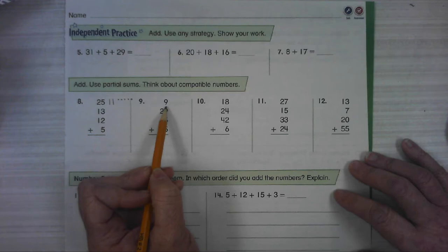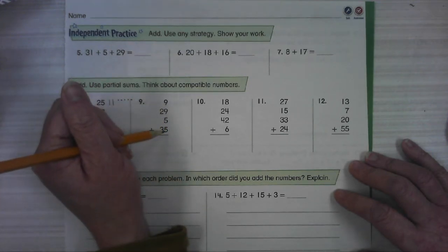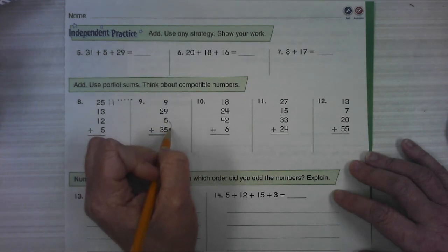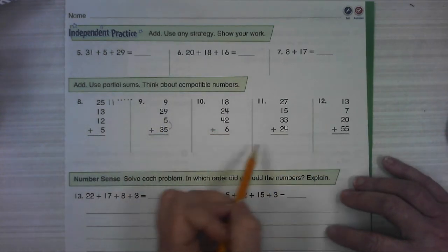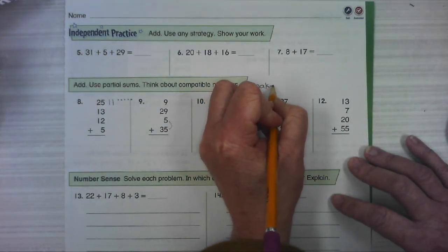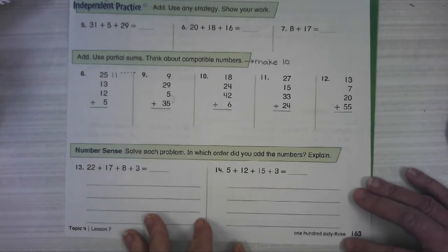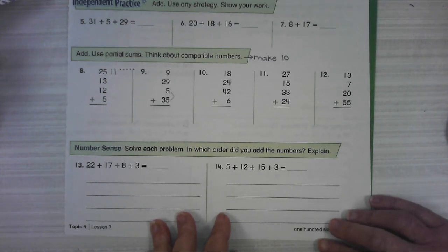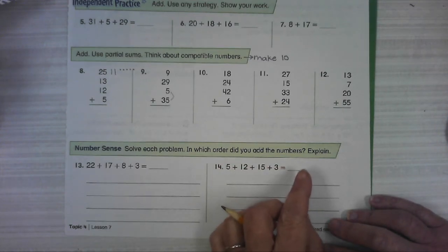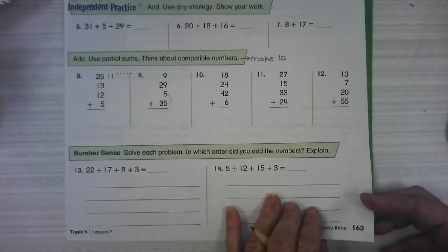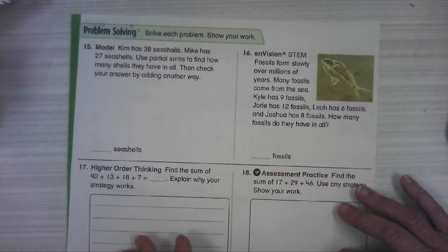9 plus what makes ten? One. We don't have another one in the ones place. 5 plus what makes ten? Five. So these two, you might want to add those two together first. Compatible numbers are the ones that make ten. This is asking if you used a strategy to choose which numbers to add together first. If you did, explain what you chose. If you didn't change the order, just say I didn't change the order. I just added them as they are.